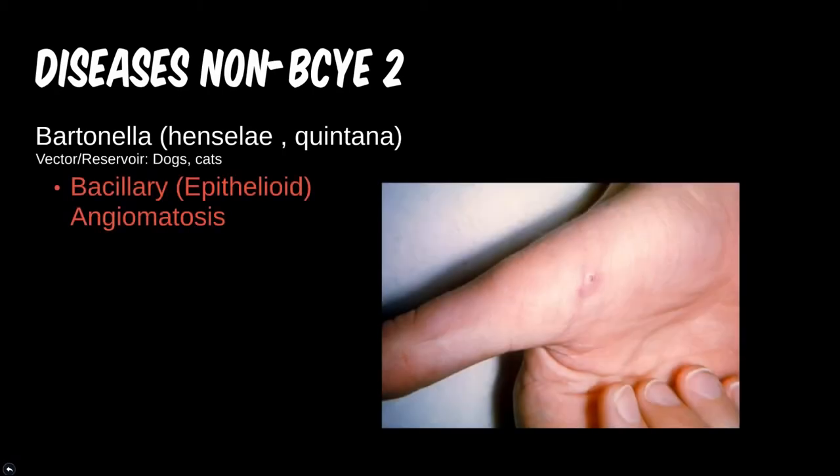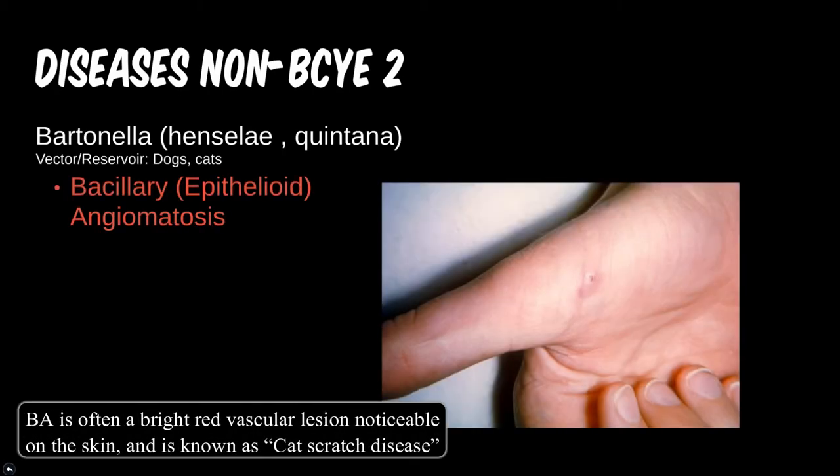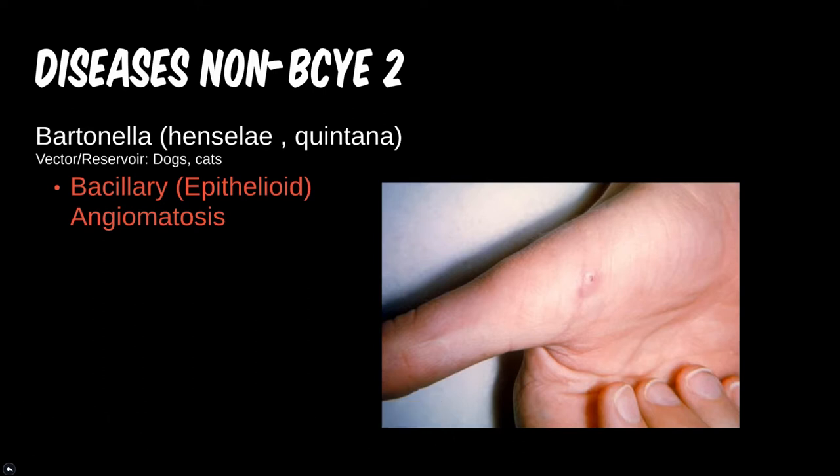Bartonella is often seen in cat and dog bites or scratches. This can be easily confused with Pasteurella. The difference is the presentation of the skin lesion: Pasteurella causes a cellulitis presentation, while Bartonella causes bacillary angiomatosis. Looking up some images for both of these diseases will help you to visually separate them out. Bartonella also causes cat scratch disease, which can present with swollen lymph nodes near the site of injury.